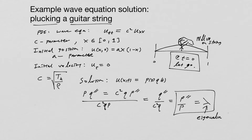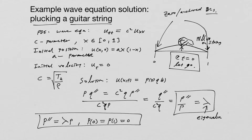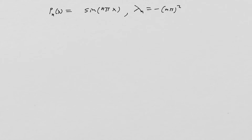We have this equation to deal with first, and we also have anchored boundary conditions. So what we have is P double prime equal to lambda times P, with boundary conditions P(0) = 0 and P(1) = 0. The P_N(X) solutions are going to be sinusoids: sin(N pi X). And our lambda_N values are going to be negative (N pi) squared, for N equals 1, 2, 3, 4, 5, and so on.